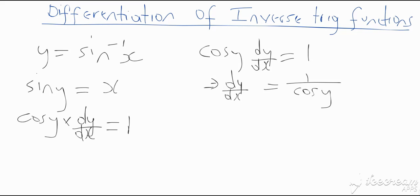This means dy/dx = 1 / cos(y). Because I started with an explicit function, I want to end with an explicit function. We have cos(y) here, so I need to get this back in terms of x. From the initial step, we know that sin(y) = x, so if we can find a connection between cos(y) and sin(y), we can express everything in terms of x.